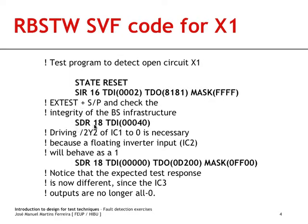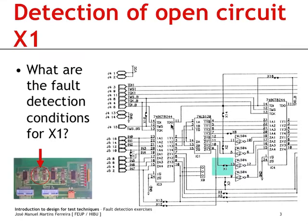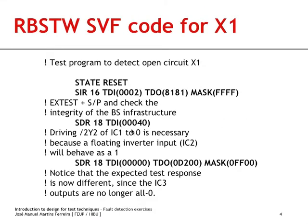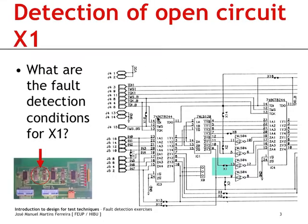We will then scan through the selected data registers, which actually in this case is the boundary scan register for both devices. We will scan 18 bits. Why 18? Because the boundary scan register in these devices has 18 cells. It is sufficient to shift into this device because this is the one that will be used to drive the test vector setting up the fault detection conditions.